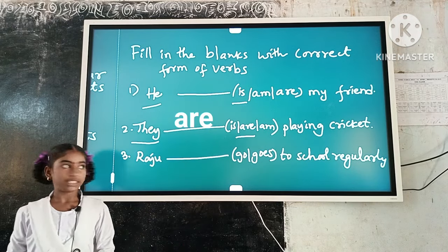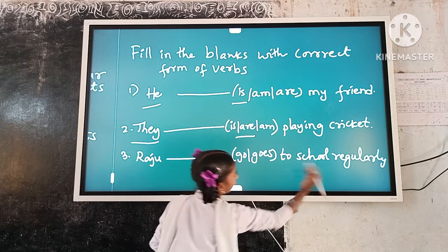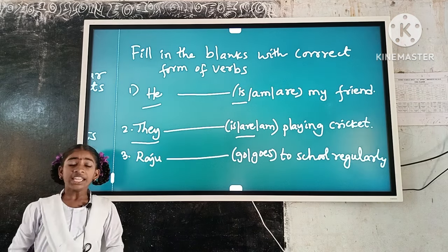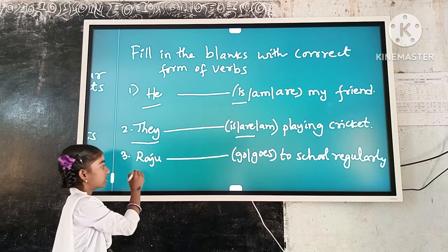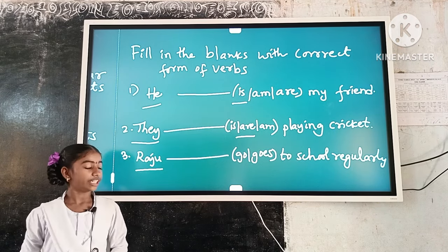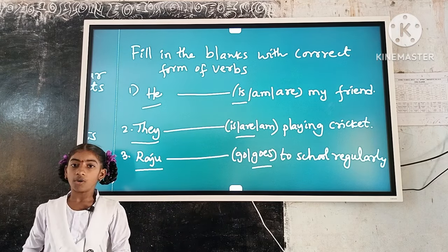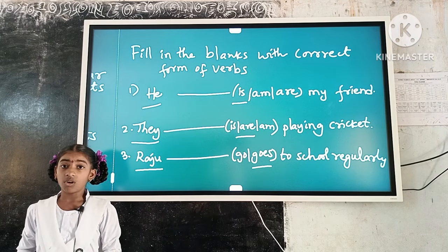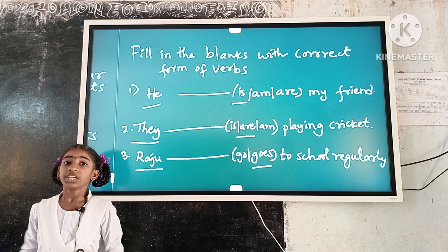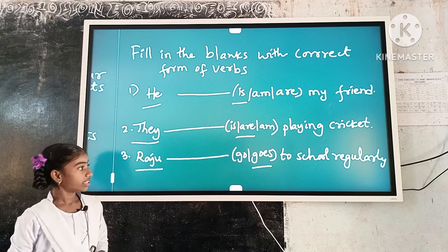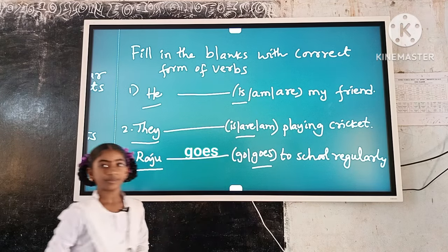Example number 3: Raju dash to school regularly. Here, 'Raju' is singular. 'Goes' is a singular verb form. So, singular subject and singular verb form agree. The answer is: Raju goes to school regularly.